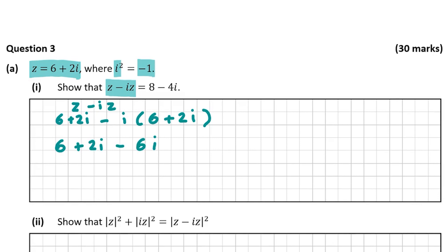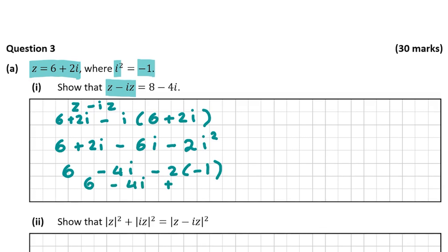Minus i multiplied by plus 2i gives minus 2i squared. We know i squared equals minus 1, so we replace it: we still have 6, then 2i minus 6i gives minus 4i, and minus 2 by minus 1 is plus 2. So we get 6 minus 4i plus 2, which equals 8 minus 4i. We've proved that z minus iz equals 8 minus 4i.